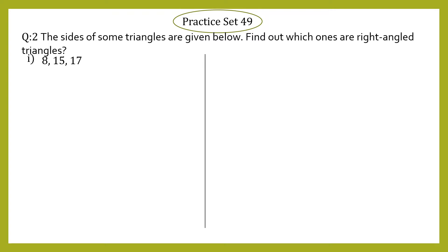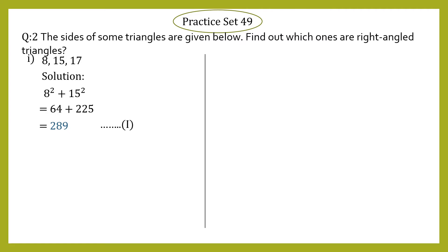We'll use the same steps as in question number one. Step number one: we take the sum of squares of the two smaller sides, that is 8 and 15. So 8² + 15² = 64 + 225 = 289. This can be taken as equation number one.